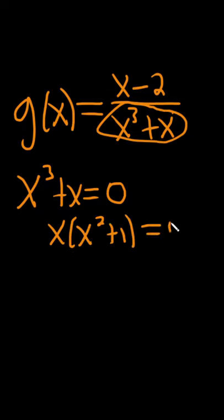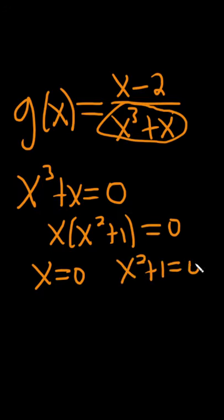The product equal to zero, so you set each factor equal to zero. So we get x equals zero.